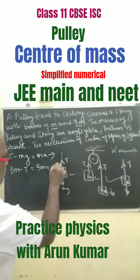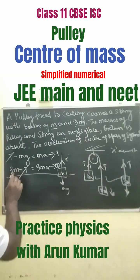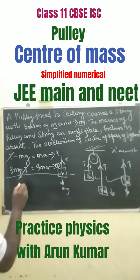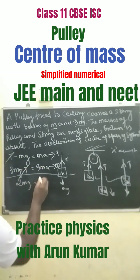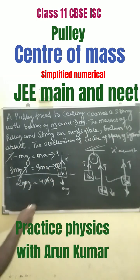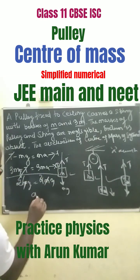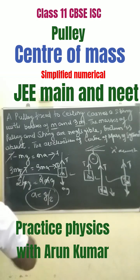Adding equation 1 and equation 2, T cancels out. We get 3Mg minus Mg equals 4MA, so 2Mg equals 4MA. M cancels, giving A equals g divided by 2 as the acceleration.